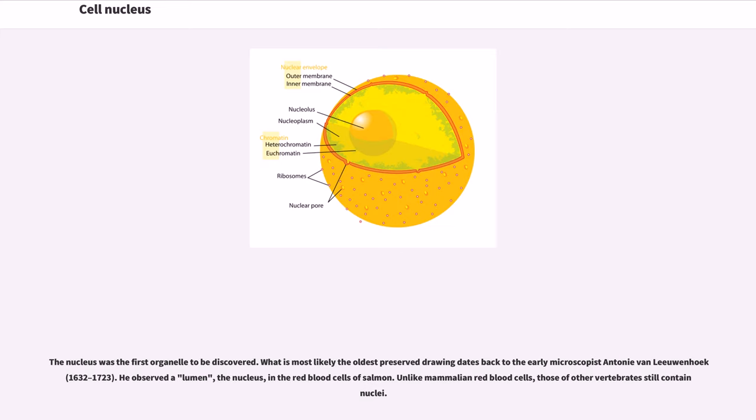The nucleus was the first organelle to be discovered. What is most likely the oldest preserved drawing dates back to the early microscopist Anthony van Leeuwenhoek 1632-1723. He observed a lumen, the nucleus, in the red blood cells of salmon. Unlike mammalian red blood cells, those of other vertebrates still contain nuclei.